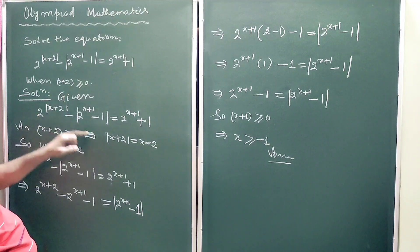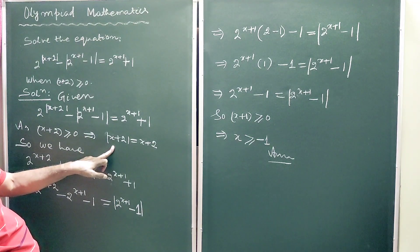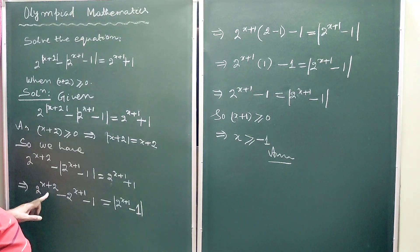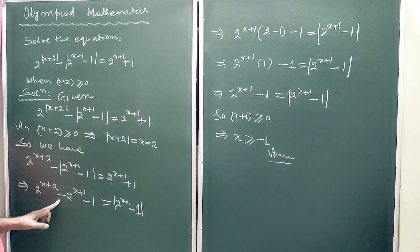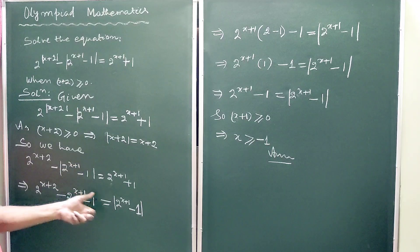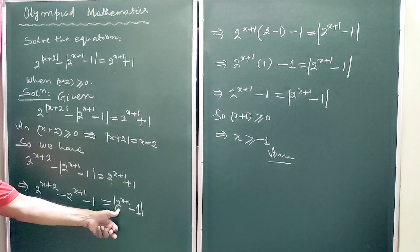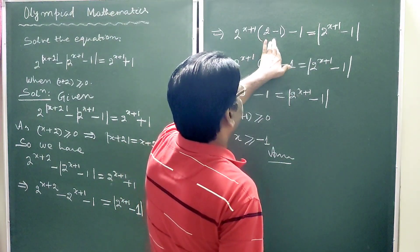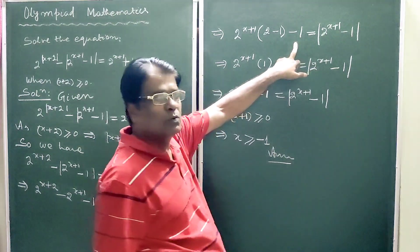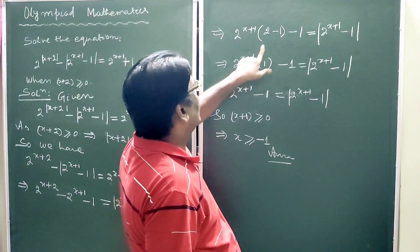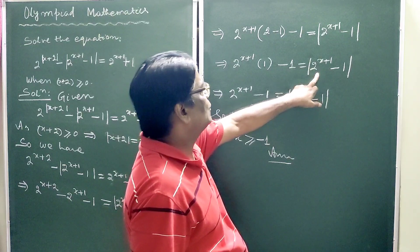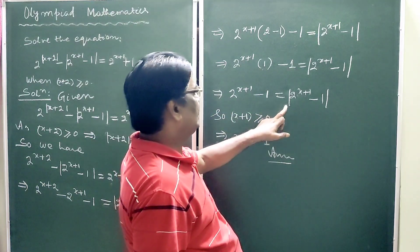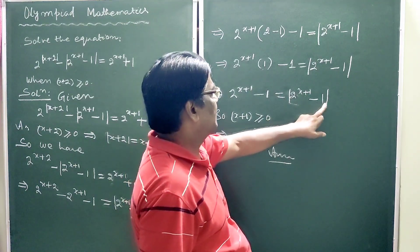As x plus 2 is greater than or equal to 0, the absolute value of x plus 2 will be x plus 2. Now, bringing 2 to the power (x+2) to the left-hand side and taking 2 to the power (x+1) common, we get 2 minus 1 equals the absolute value of 2 to the power (x+1) minus 1. So 2 to the power (x+1) minus 1 equals the absolute value of 2 to the power (x+1) minus 1.